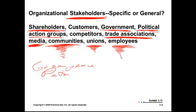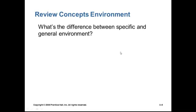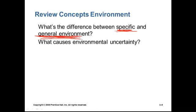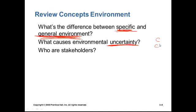A little review quiz about the environment. What's the difference between the specific and general environment? The specific has clear and direct impacts on the organization; the general environment may affect it, and managers scan the general environment for things that might affect their organization. What causes environmental uncertainty? It's the degree of change and the complexity — the number of components — that leads to environmental uncertainty. Who are a few organizational stakeholders — groups affected by or that may affect the organization?